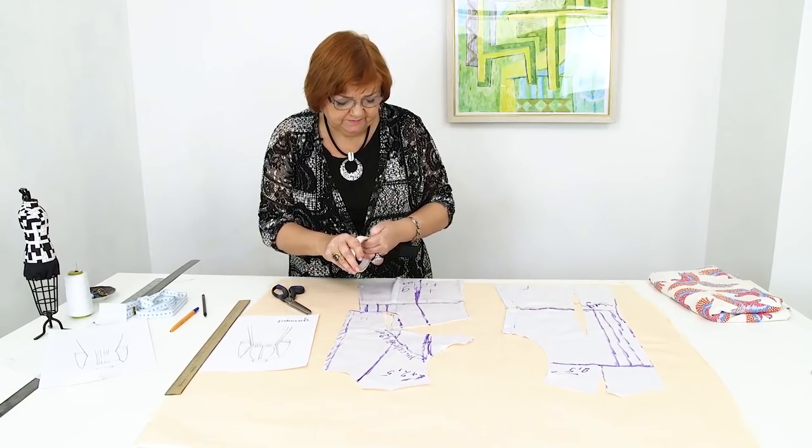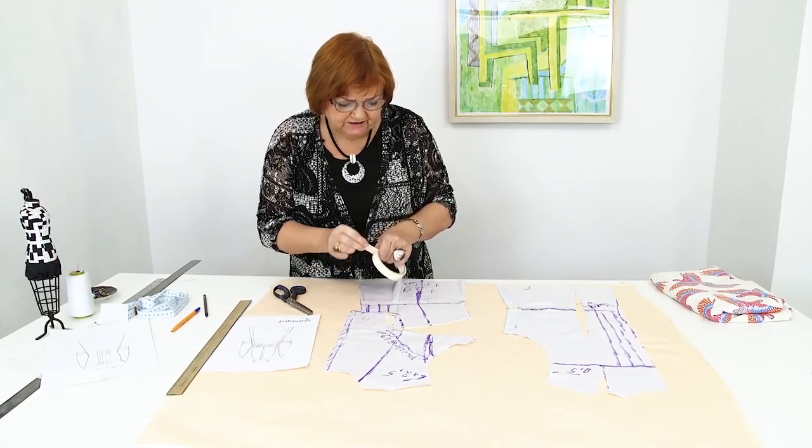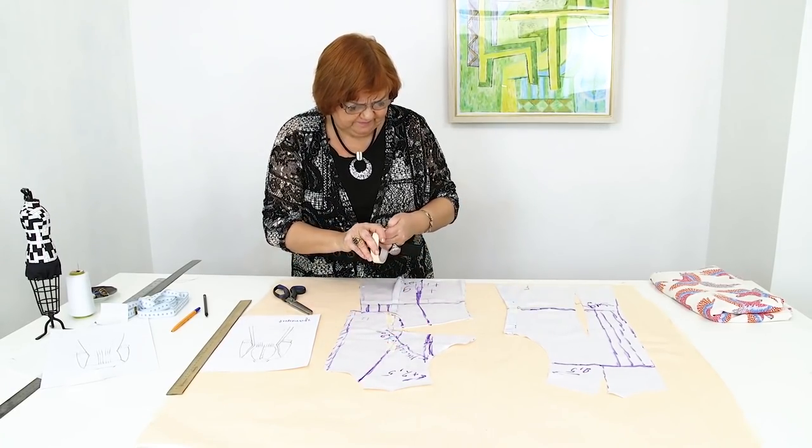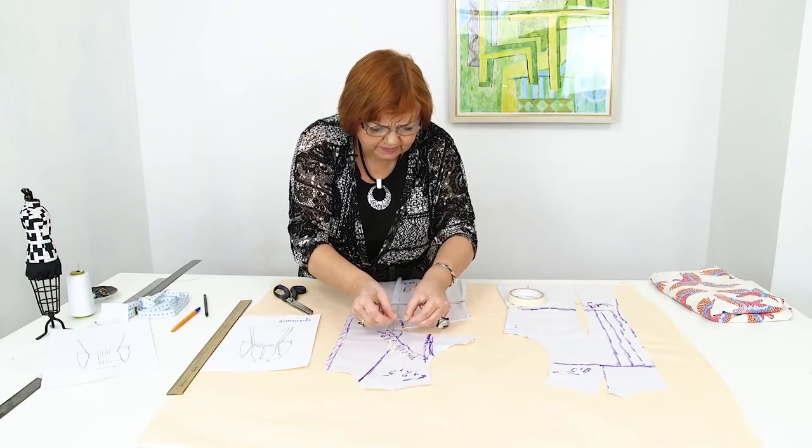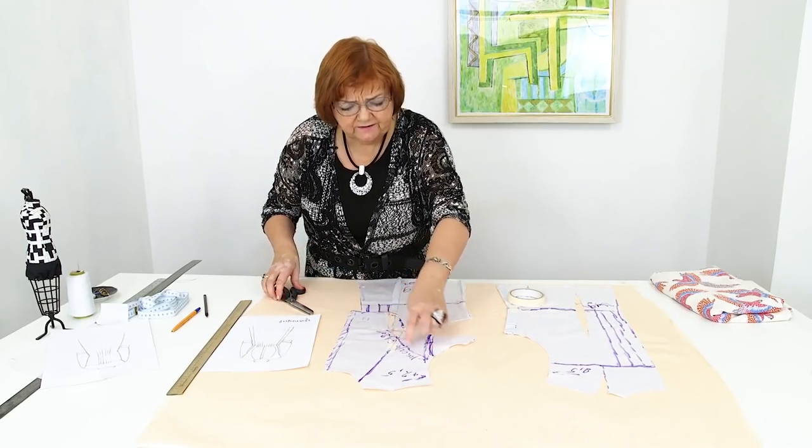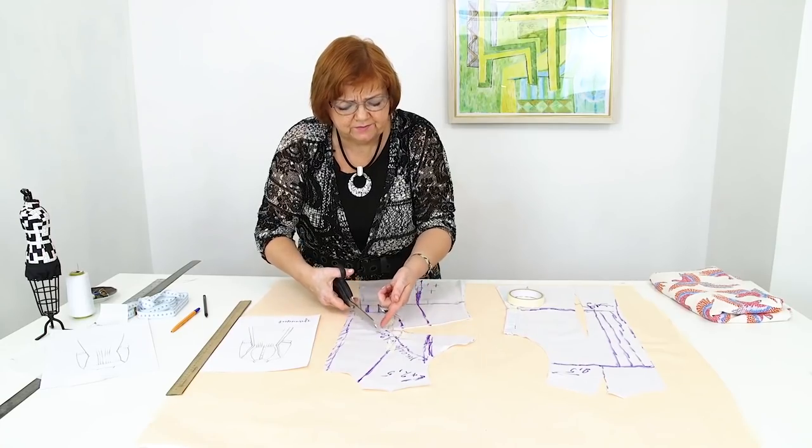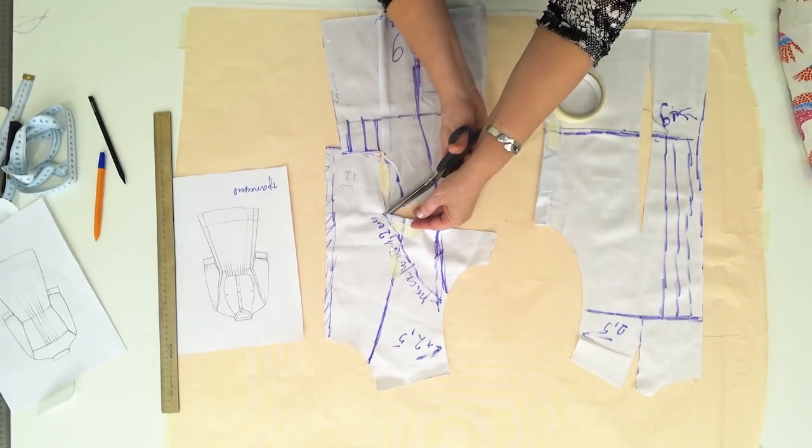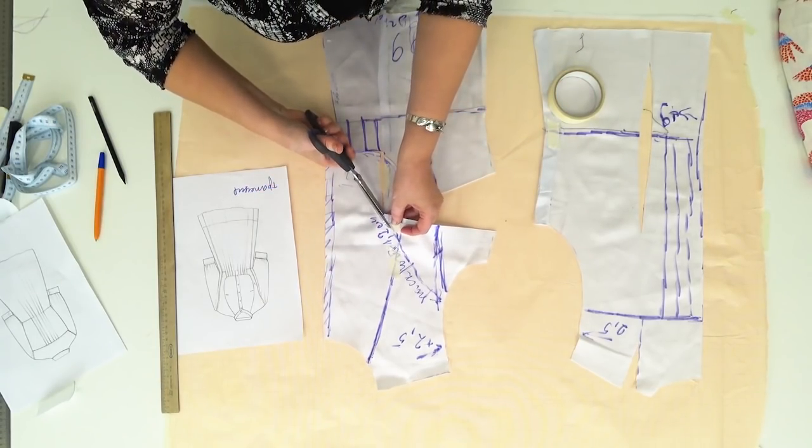Have a look here. Before cutting the yoke, you should open the chest dart. I forgot that I had written here that it should be opened for 1.2 cm. We need to do it in order to make these parts more loose.